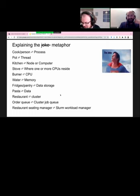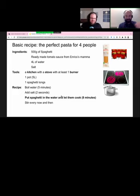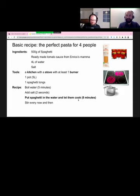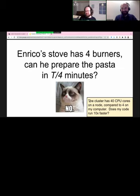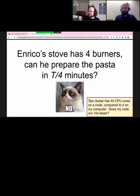This is the analogy we're using to explain the workings of how the cluster works and how parallel computing works. I'm the chef — I'm the process, your Python or R process — and my task is to cook the pasta. It will take me eight minutes. Now, if my stove has four burners, can I make the pasta in two minutes — eight divided by four? No, normally not, because each individual piece of pasta needs eight minutes to be processed. What you can do is cook more pasta at the same time.